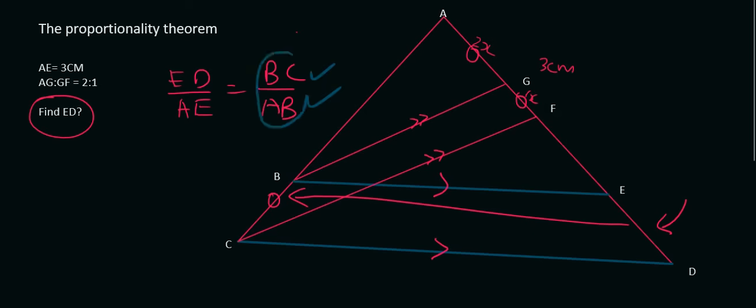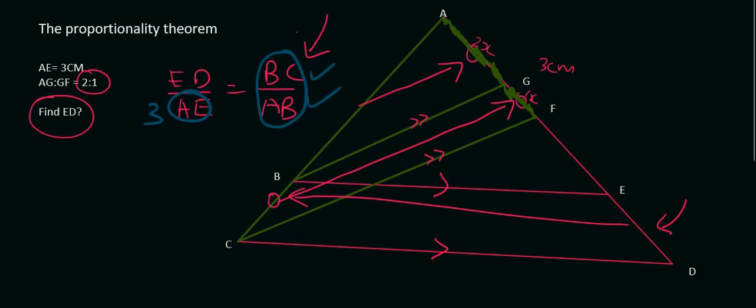Then we realized that we don't have BC over AB. We did have AE, that was 3. So then we went and found BC over AB. So we worked in this triangle where we saw that BC over AB, so BC is opposite GF and AB is opposite AG. Now AG and GF were given to us in terms of ratios, and so that allowed us to find BC over AB. Once we had BC over AB, we substituted it back over here, and that allowed us to find ED.